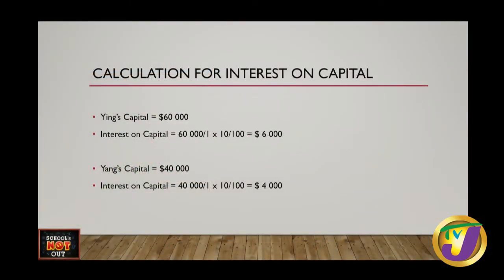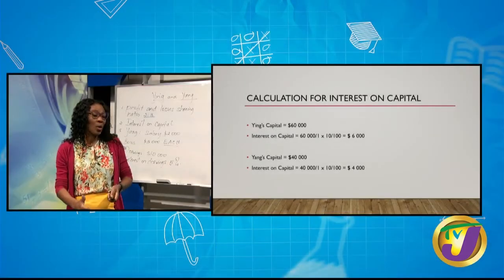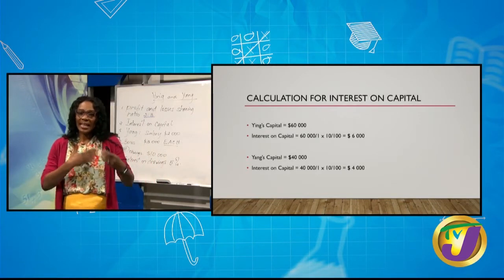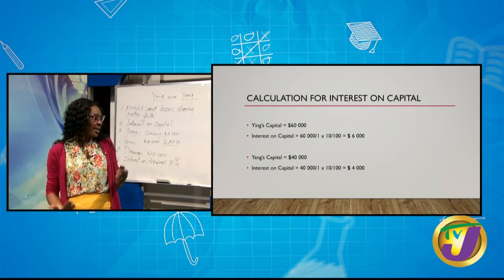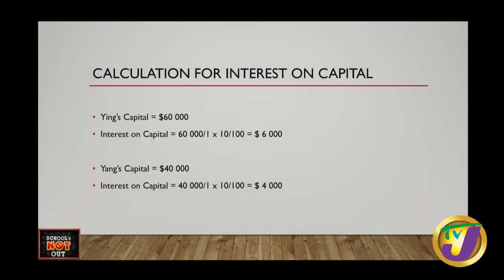How do we calculate interest on capital? Yin's capital was sixty thousand dollars, and the agreement is an interest on capital of ten percent. So ten percent of sixty thousand dollars gives us six thousand dollars. Yang's capital is forty thousand dollars, and his interest is also ten percent. So ten divided by one hundred times forty thousand dollars gives Yang's interest as four thousand dollars.